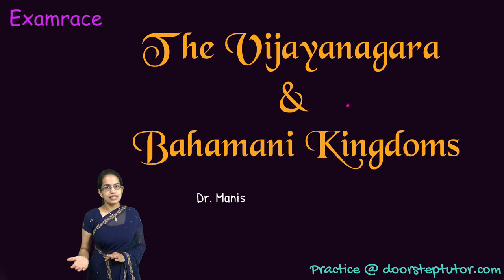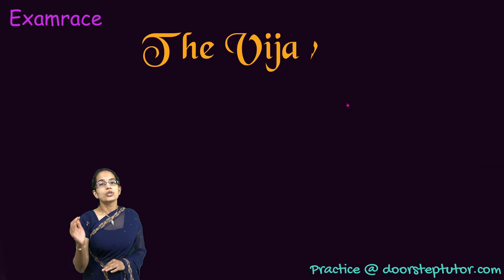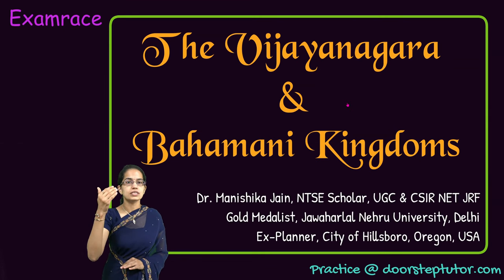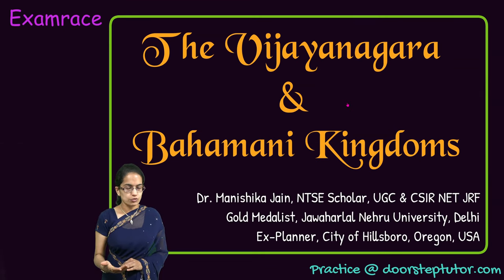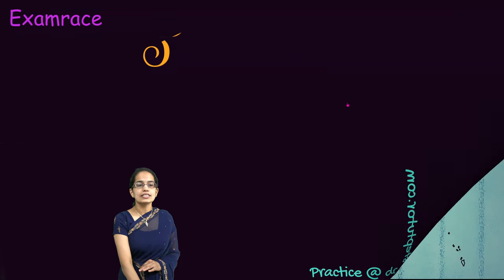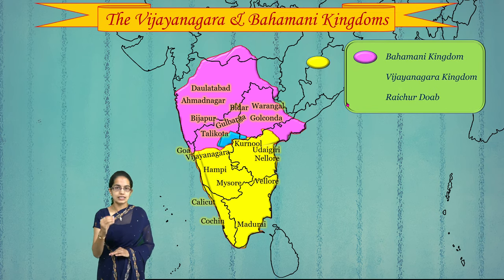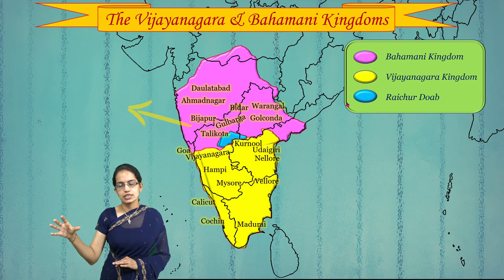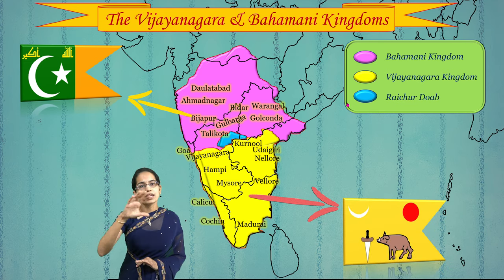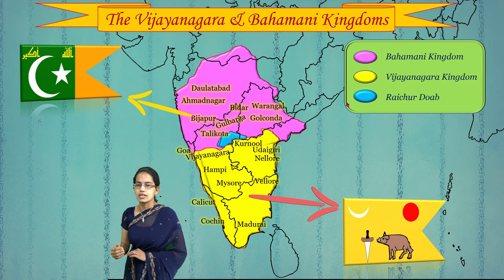Knowing about the Vijayanagar and Bahamani kingdoms - these two kingdoms were located in southern India. During this time, there was the Tughlaq dynasty in the north, with Muhammad bin Tughlaq as a major ruler in Delhi when the Vijayanagar dynasty was founded. The significant decline of the Tughlaq successors led to north India being divided into smaller states like Delhi, Jaunpur, Odisha, Kashmir, Malwa, and Mewad, while the Deccan became a separate entity containing the Vijayanagar and Bahamani kingdoms.